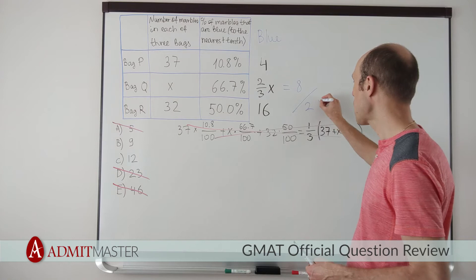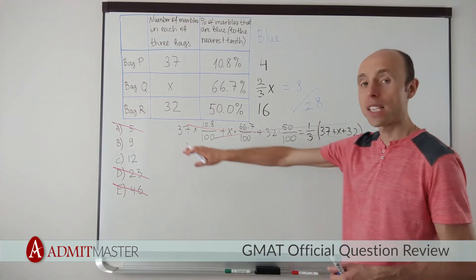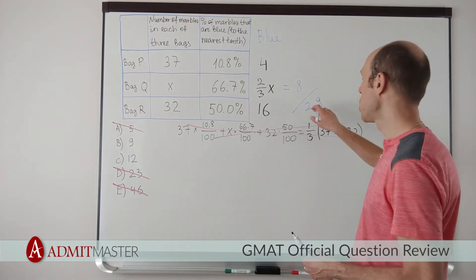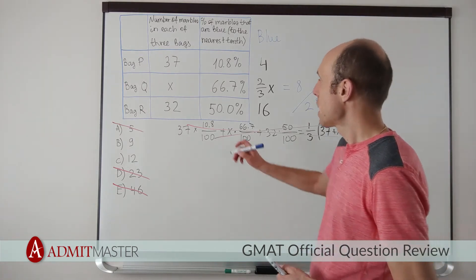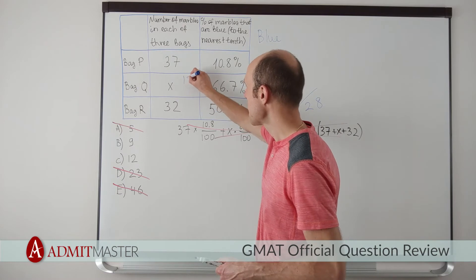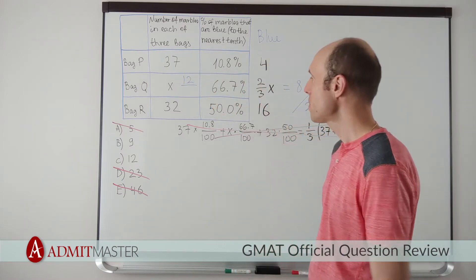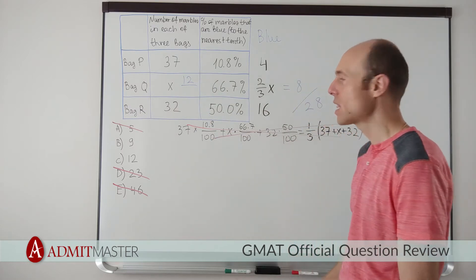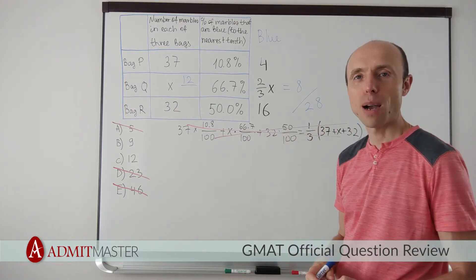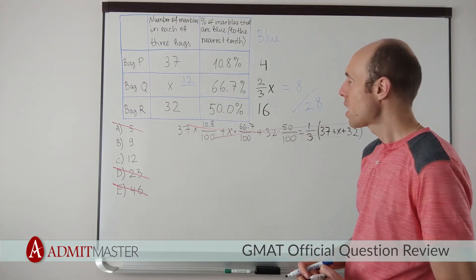So the total number of blue marbles, if C were the right answer, would have been 28. Well, if 12 is the number I'm testing here, then 32 plus 12 plus 37 will give me the total number of marbles. All right.